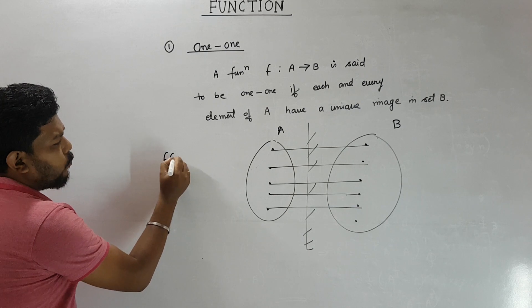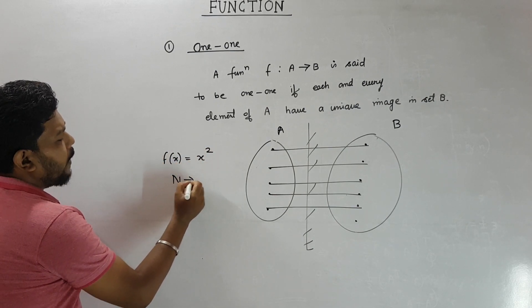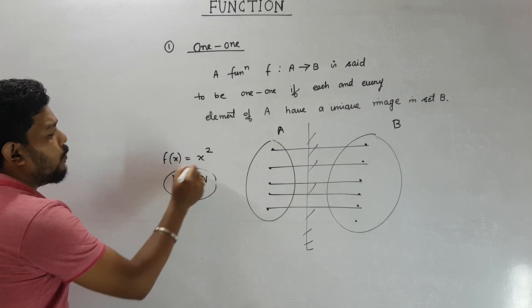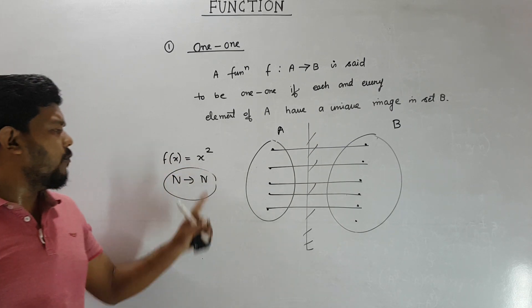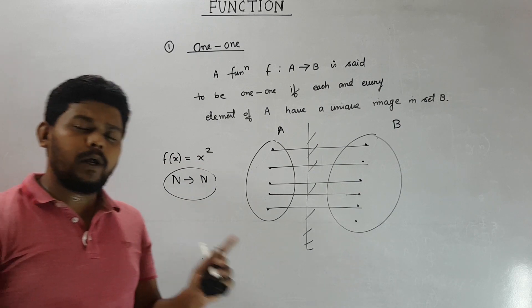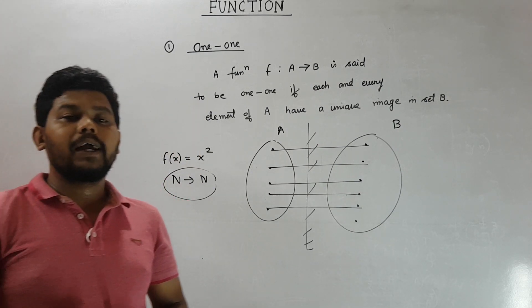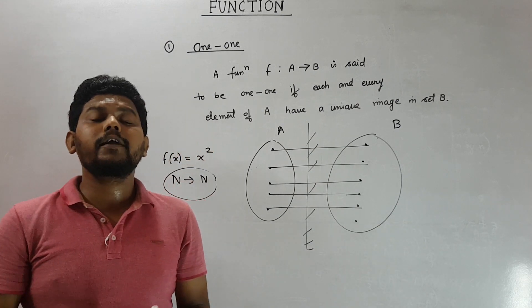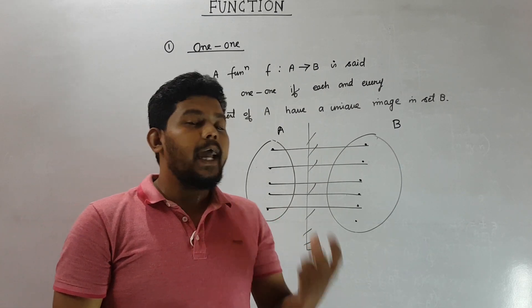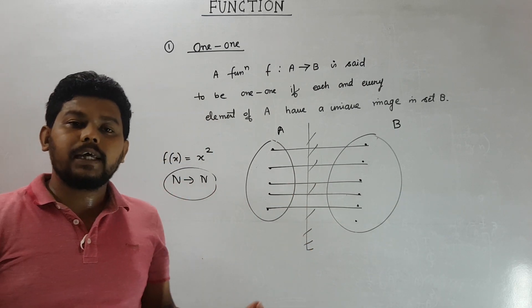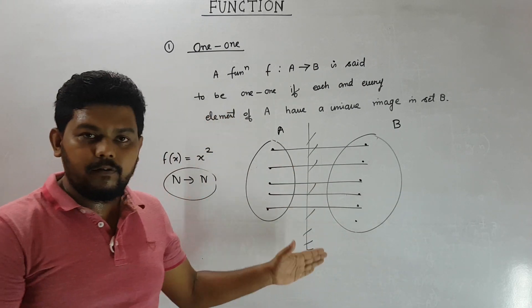For example, if I define f(x) = x² from ℕ to ℕ, then for x=1 we get 1, for x=2 we get 4, for x=3 we get 9. For all different x values we are getting different y values — every x has a unique image — so it is a one-one function.